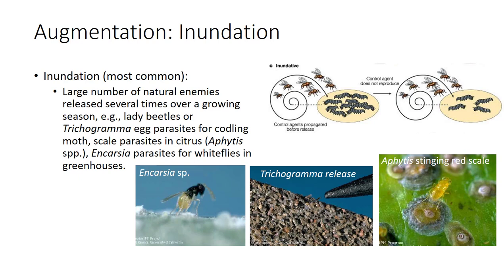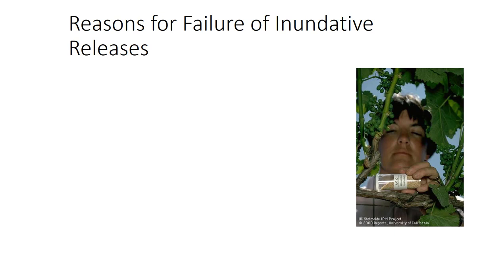Inundative releases are most effective against pests that cause economic damage only during a limited period of the year and against pests in a controlled environment. A wide variety of predators and insect parasites have been used in inundative programs and are the primary method of using microorganisms and nematodes for biological control. The release of trichogramma egg parasites for codling moth, scale parasites for citrus, and encarsia parasites for whiteflies in greenhouses are three examples that show a properly designed inundative release can be an effective tool in IPM programs.